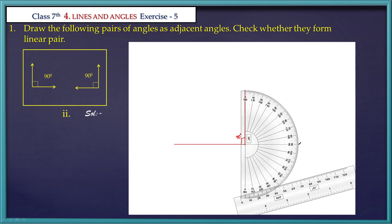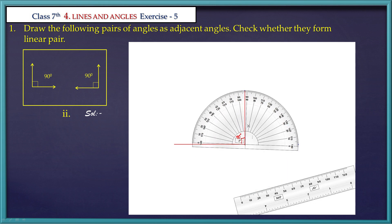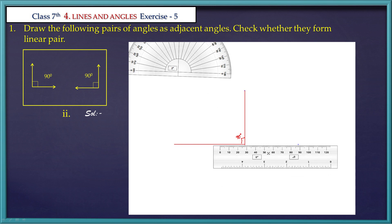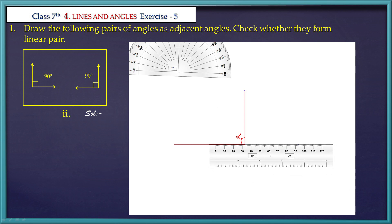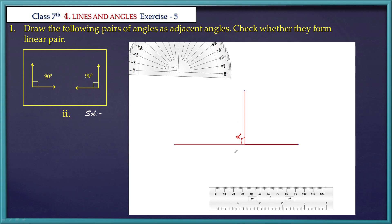Now we mark the point on the protractor. This angle is at the vertex. Now we mark the point and draw the 90 degrees adjacent angle. As you can see, now we draw one line — this is a linear pair, this is a straight line. This contains 90 plus 90 equals 180. This is a straight line. Therefore, this is a linear pair.